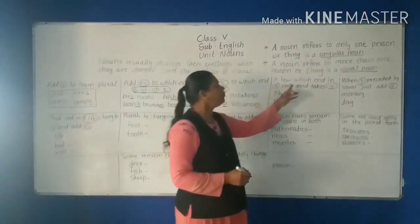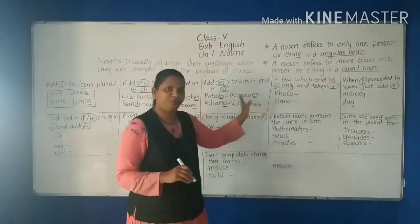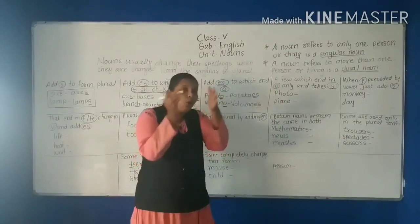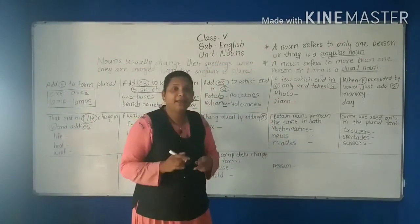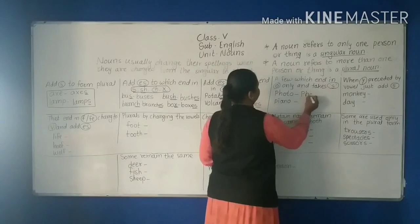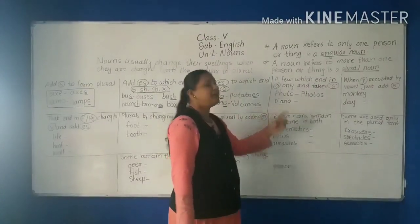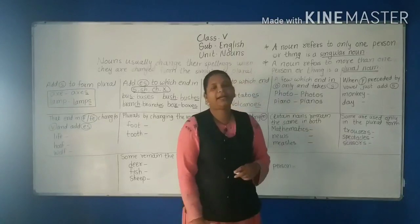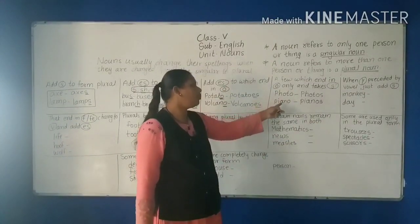However, a few nouns ending in 'o' only take 's' — not 'es'. For example, 'photo' becomes 'photos', and 'piano' becomes 'pianos'. So unlike 'potato' and 'volcano' which take 'es', these words take only 's' to form the plural.